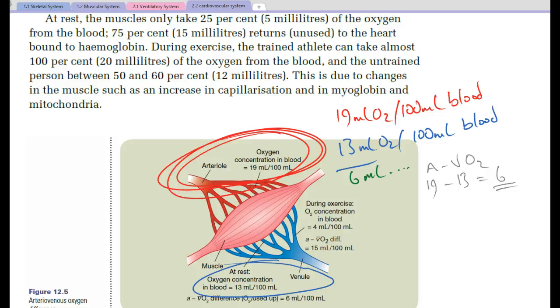During exercise, venule oxygen concentration could be as little as 4 millilitres. So here, we would have an A-V-O2 difference of 19 in the arteries and the venules 4. So 19 minus 4 is 15, so the A-V-O2 difference being 15.